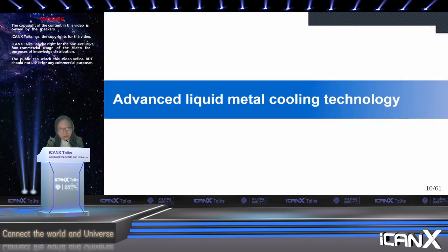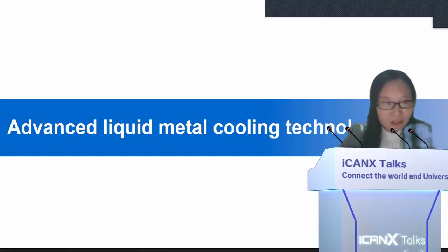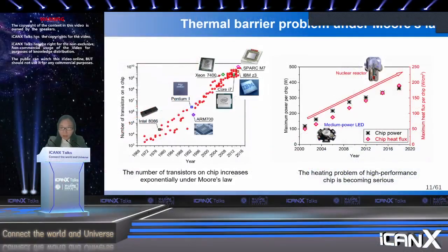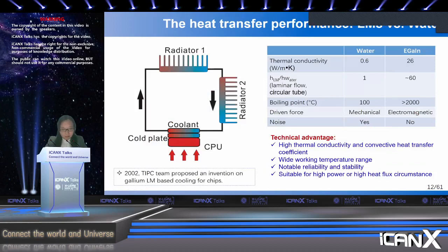Because of thermal engineering background, I would like to start with thermal management. To solve the thermal barrier problem of higher-performance integrated chips, an effective cooling method is always in high demand. Compared to water, the thermal conductivity of the gallium-indium alloy is about 50 times higher than that of water. The convective heat transfer efficiency of liquid metals in laminar flow in a circular tube is also much higher.